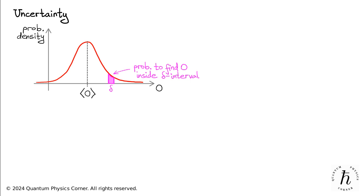The expectation value of O, which we already know how to calculate, is the average outcome of a large number of measurements of O, each performed on a system in the same quantum state. We now want to quantify the width of the probability distribution, which we will denote by delta O.